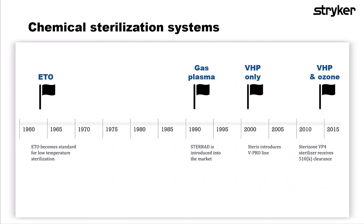Something that really stands out on this timeline is the fact that if you think about how complex our equipment has become — specifically over the past 15 to 20 years — it's alarming how much our low temperature sterilization modalities have not kept up with that. The equipment we're using has far more nooks, crannies, and crevices, with more complex cleaning and sterilization instructions to reference. It's important to note that even though our equipment has gotten far more complex, the sterilization modalities have been slow to catch up.